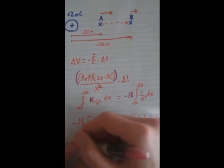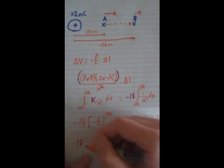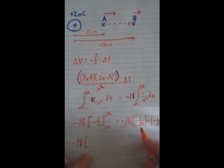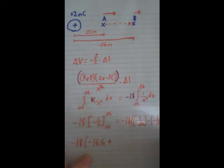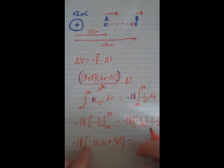So, that'll end up being negative 16.6 plus 50, because these two negatives will cancel out. And that'll all come out to, when you add and multiply this up, it'll come out to 600 volts.